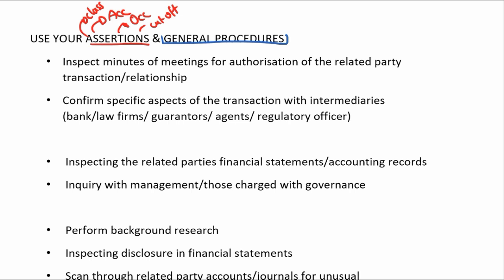To test for occurrence, we need to make sure the transaction was authorized, so inspect the minutes of meetings for authorization of that transaction. Also for occurrence, there should be a contract with the details, so inspect the contract with the related party to make sure it is a valid transaction.